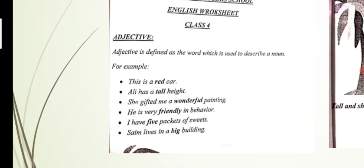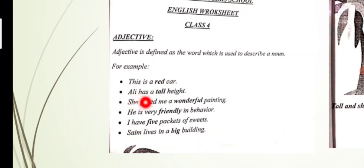For example: 'This is a red car.' Now what is the noun here? Car — it is a thing. And red tells us what the car is like. Red hai toh yeh uski khasiyat batata hai — so 'red' is the adjective. Then: 'Ali has a tall height.' Ali ki height kaisi hai? Lambi — so tall is describing Ali's height, which makes 'tall' the adjective.